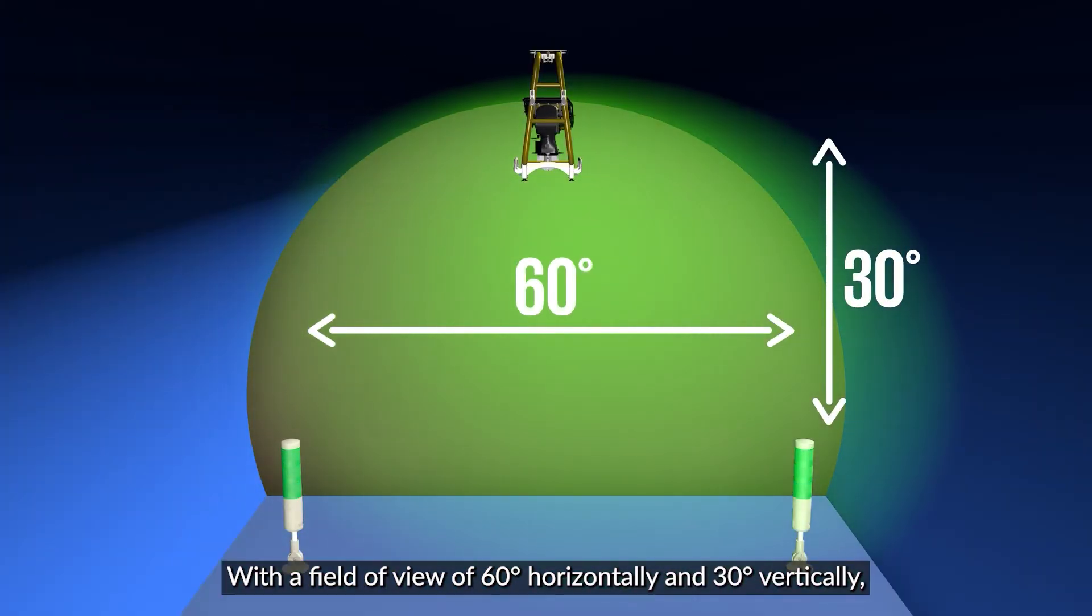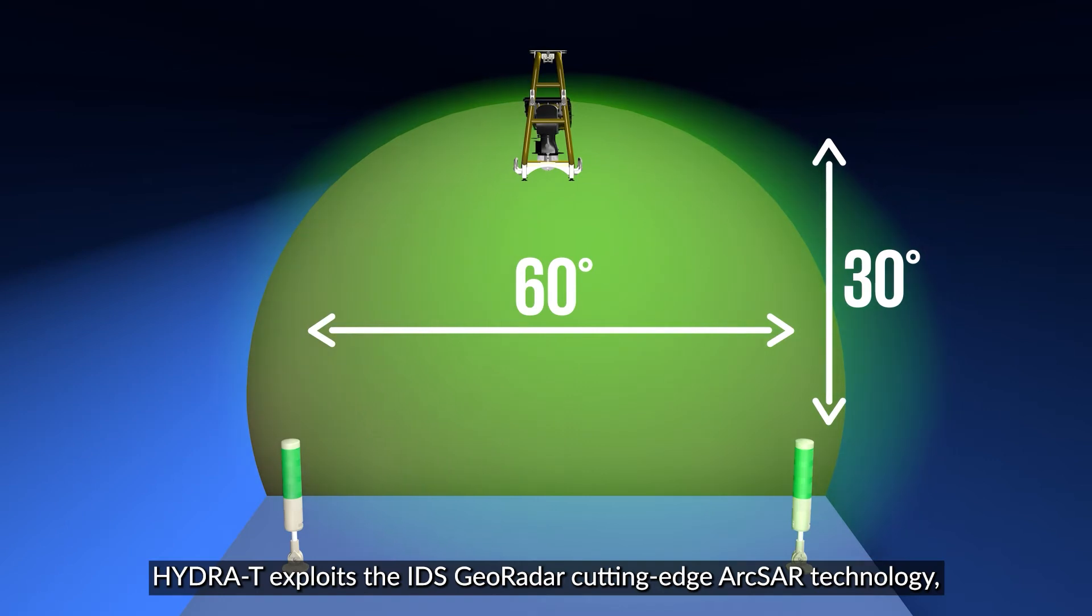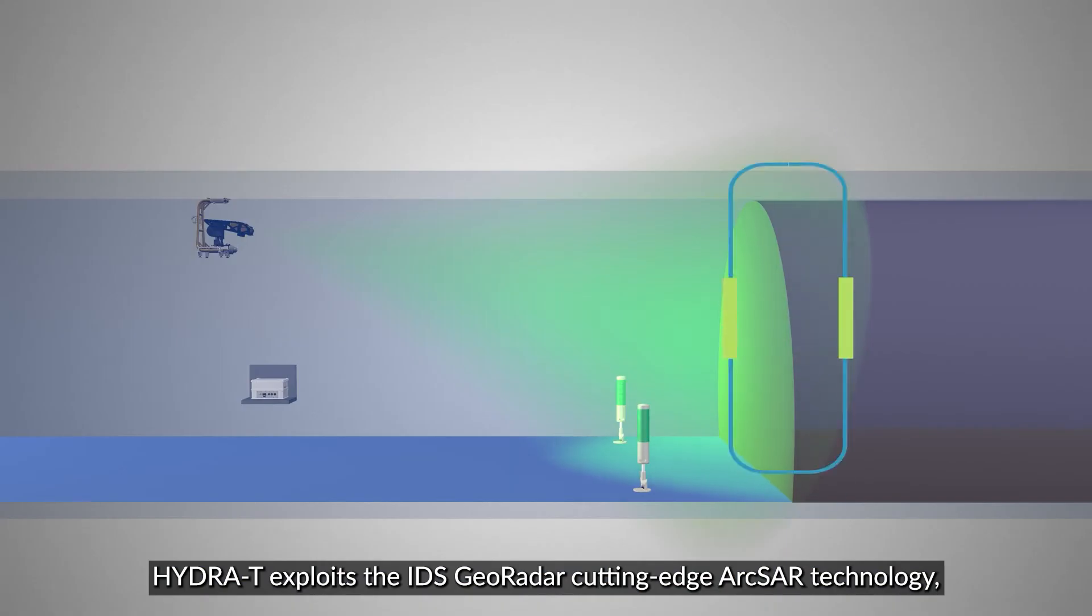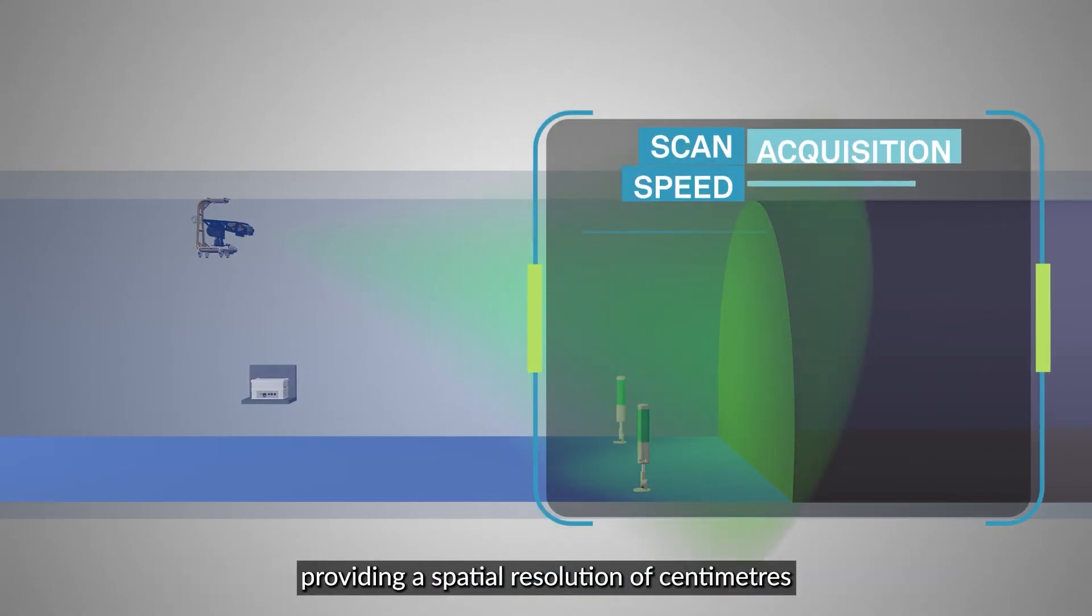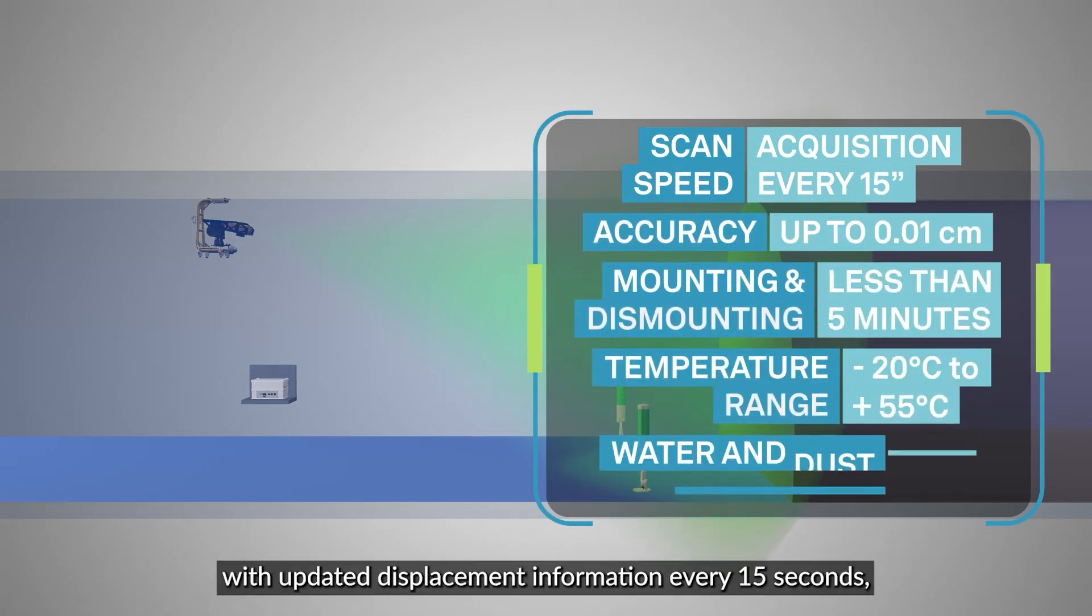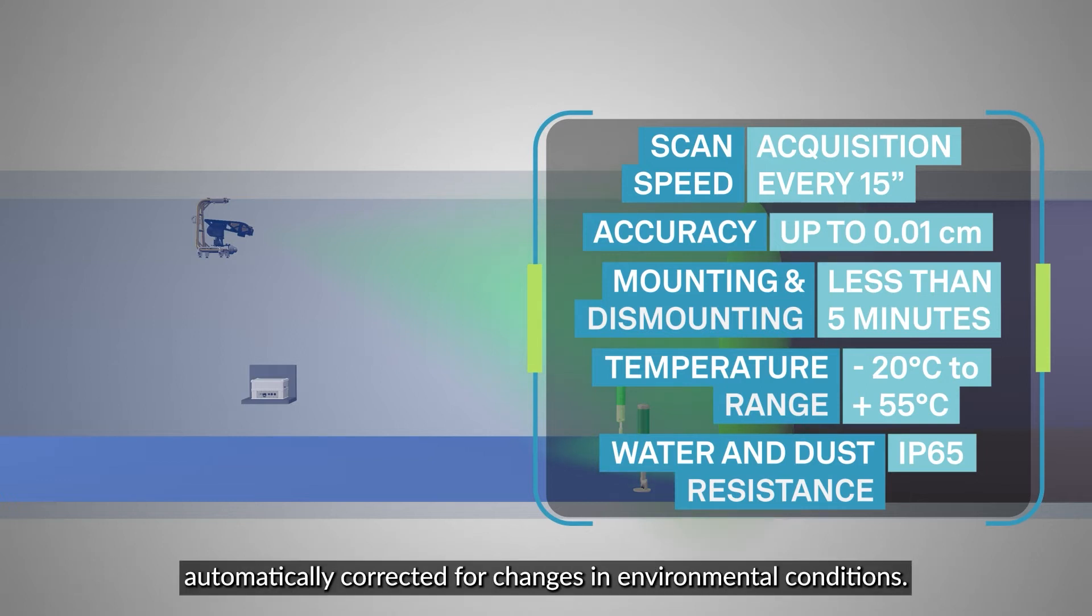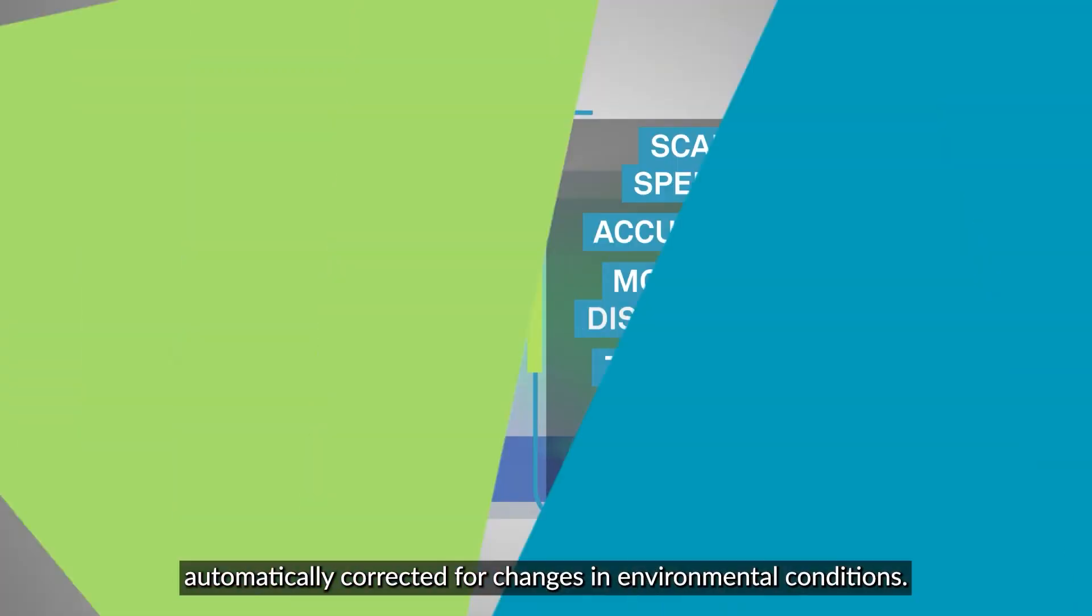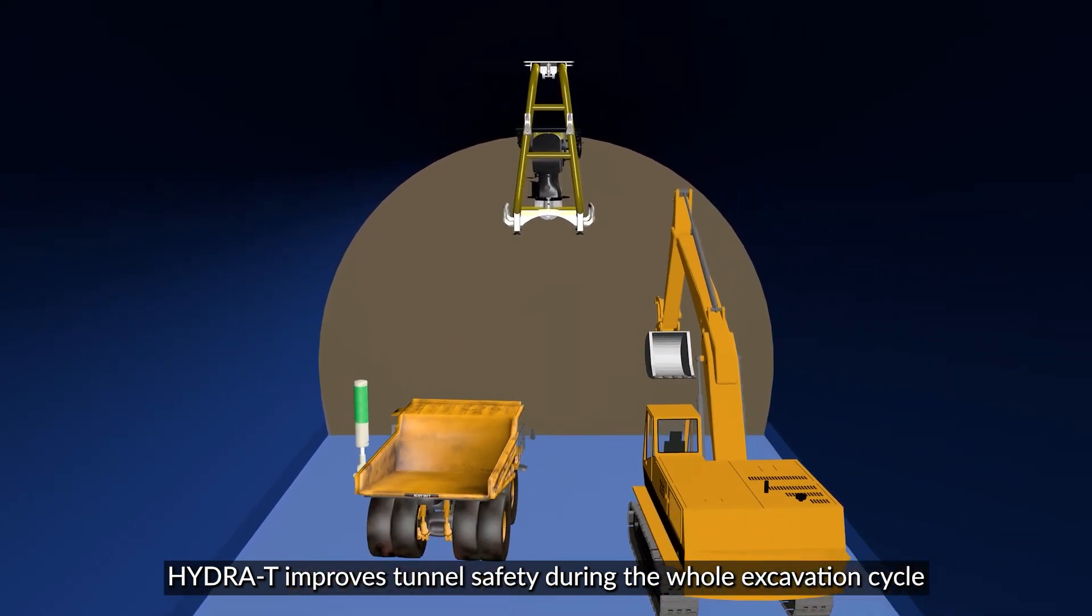Hydra T exploits the IDS georadar cutting-edge ARCSAR technology, providing a spatial resolution of centimeters with updated displacement information every 15 seconds, automatically corrected for changes in environmental conditions. Hydra T improves tunnel safety during the whole excavation cycle.